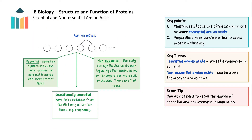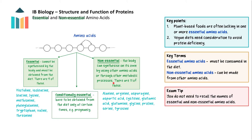Amino acids are classified as essential or non-essential, based on whether the body can synthesise them or not. Essential amino acids are those that cannot be synthesised by the body and must be obtained from the diet. There are nine essential amino acids. Non-essential amino acids are those that the body can synthesise on its own by using other amino acids or through other metabolic processes. At certain times, non-essential amino acids may become conditionally essential and dietary intake may be necessary to meet the body's needs, for example during pregnancy or infancy.